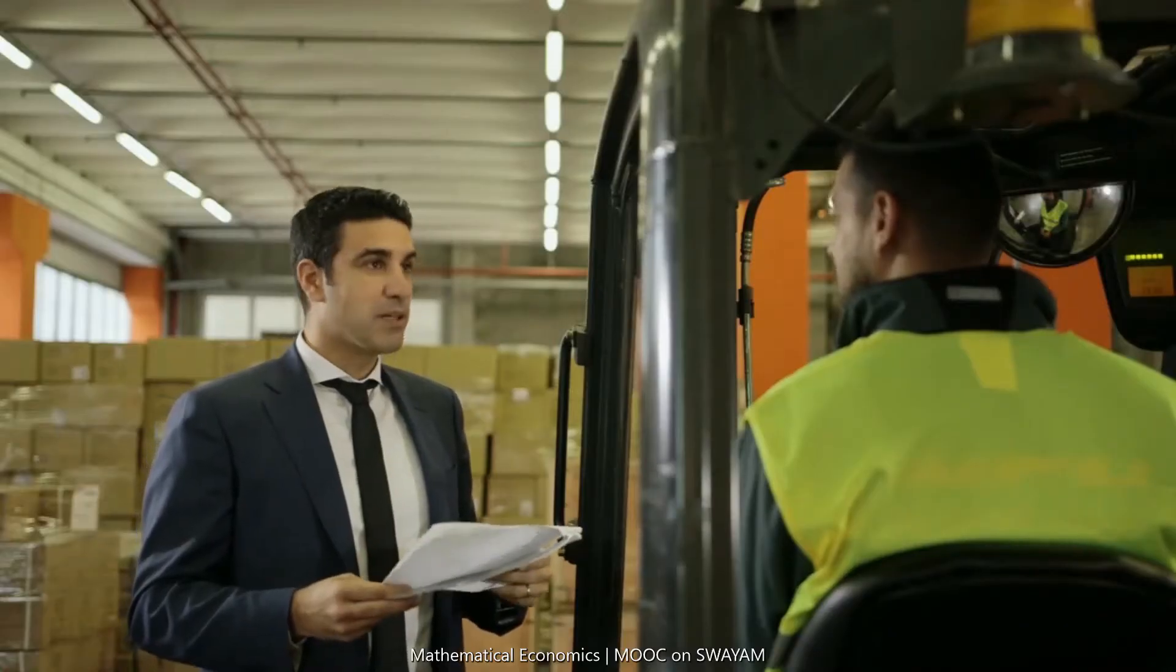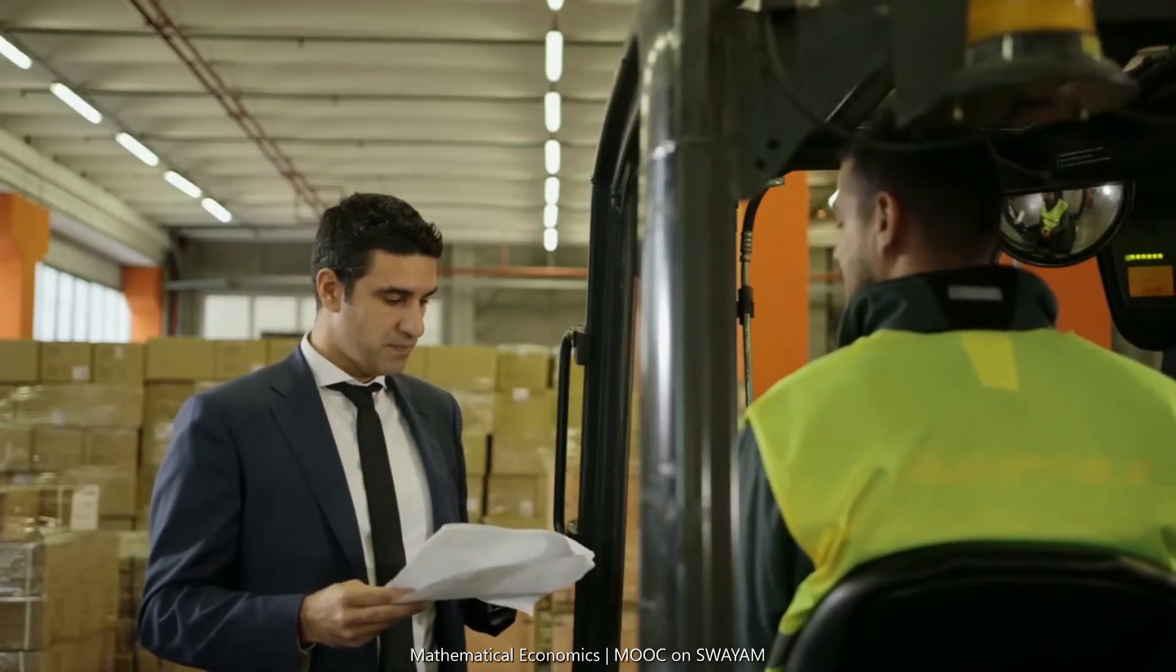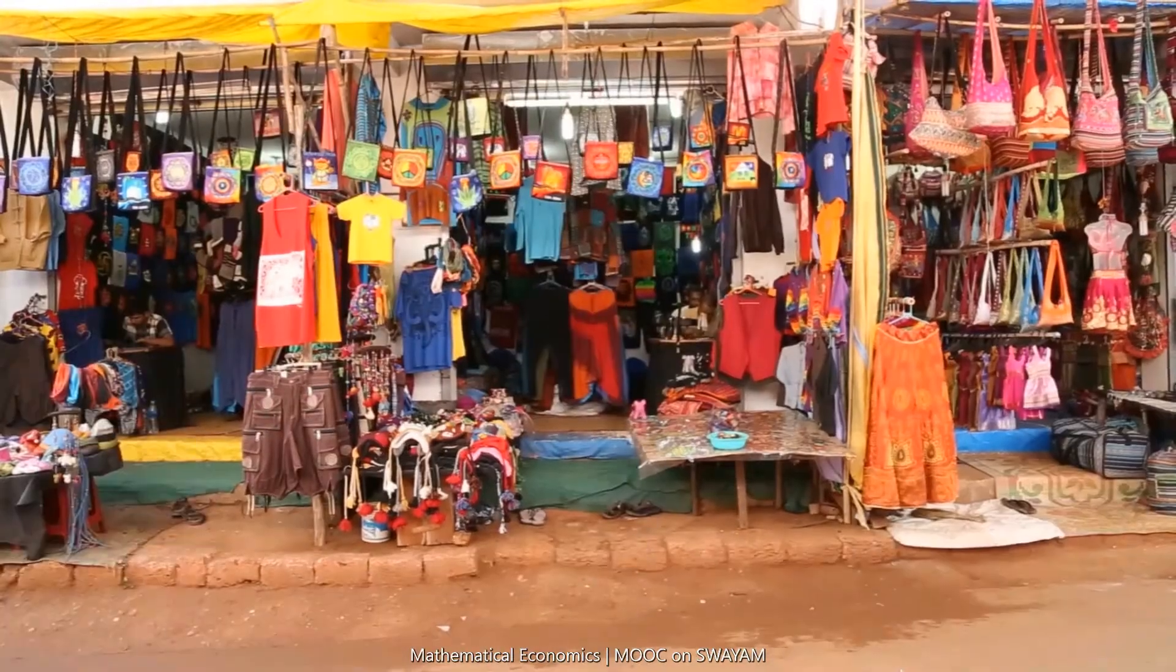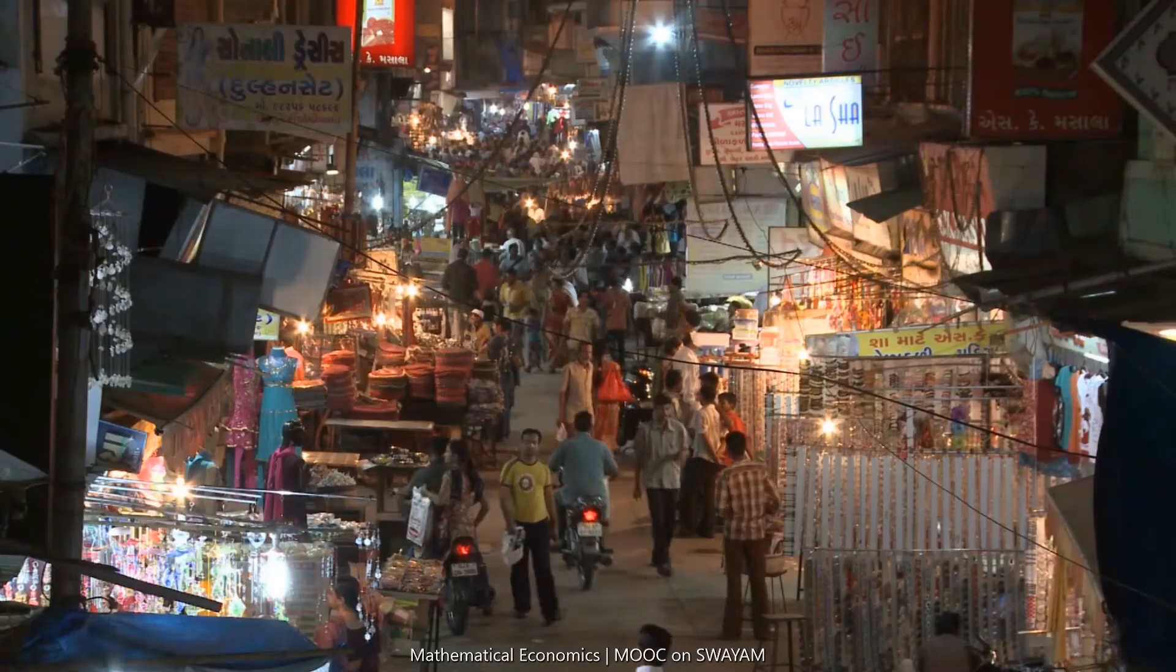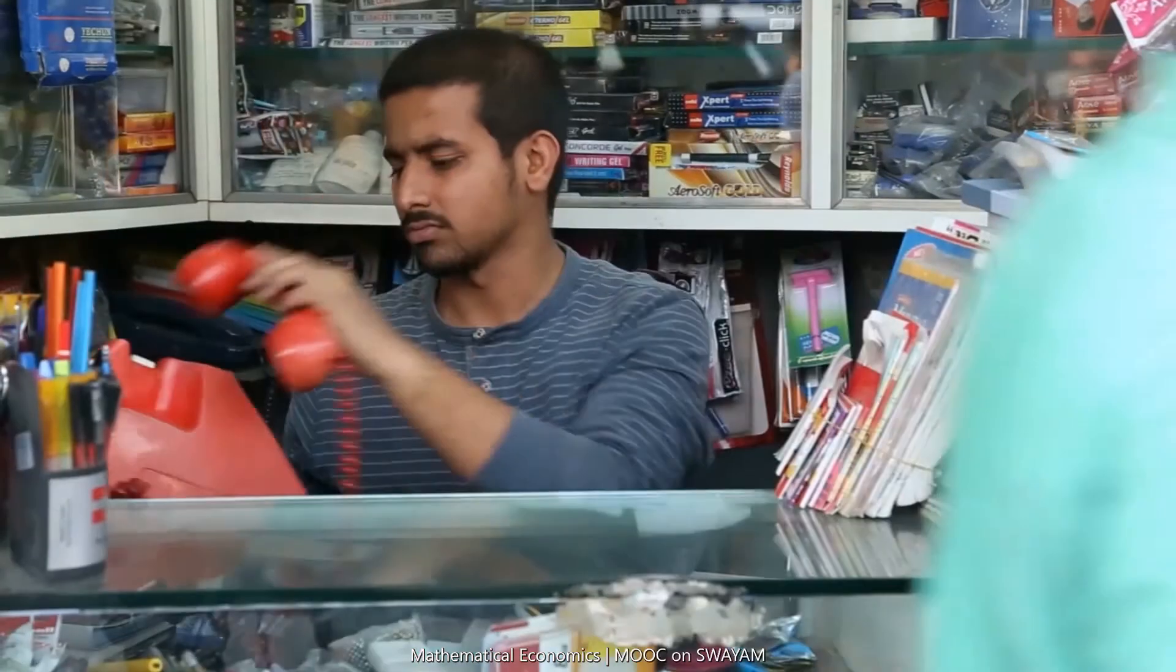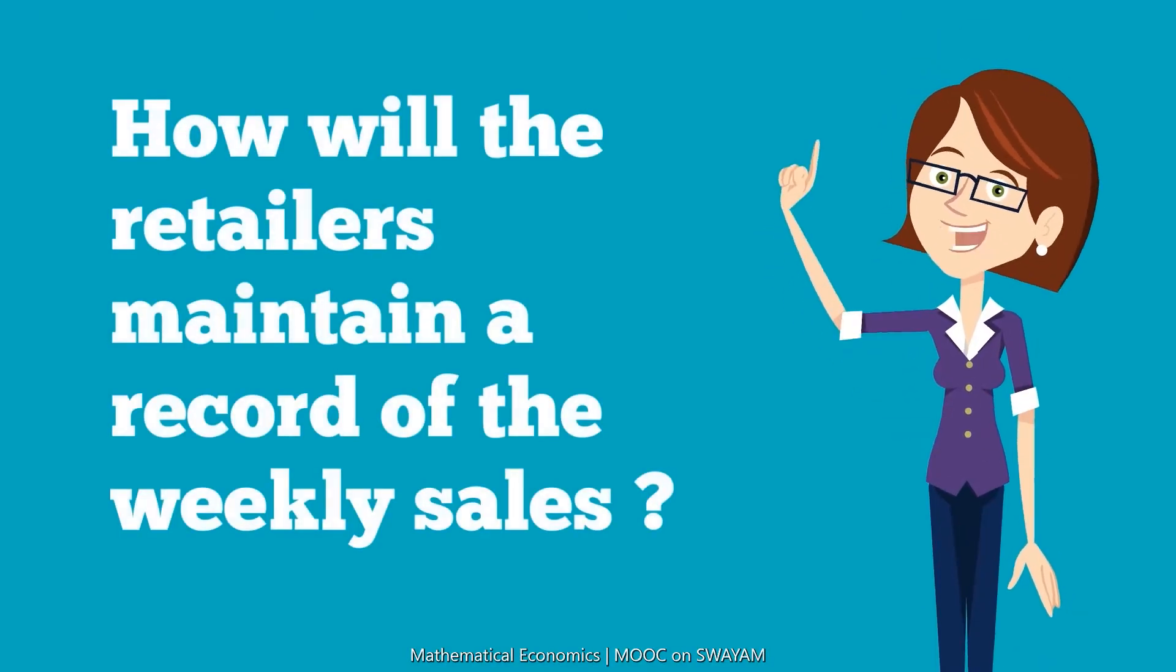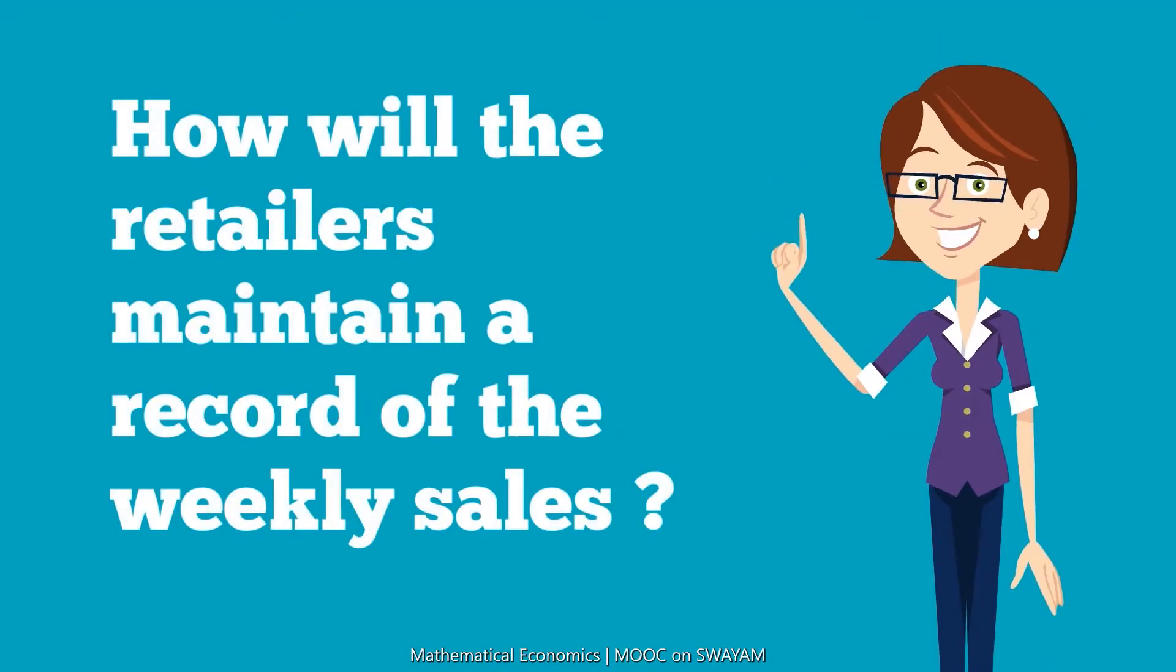A manufacturer based in Dehradun produces two products and sells in two different markets. The retailer of both shops wants to keep a record of the sales of the two products at the end of each week. How will the retailers maintain a record of the weekly sales?